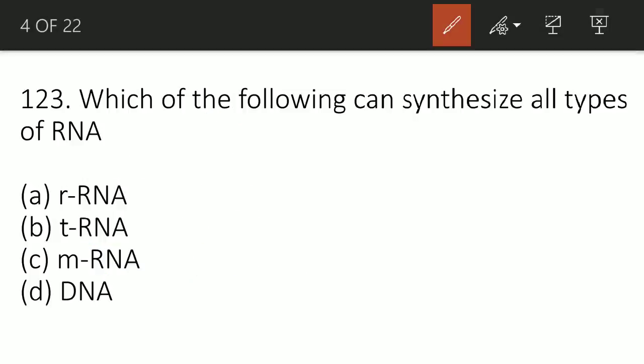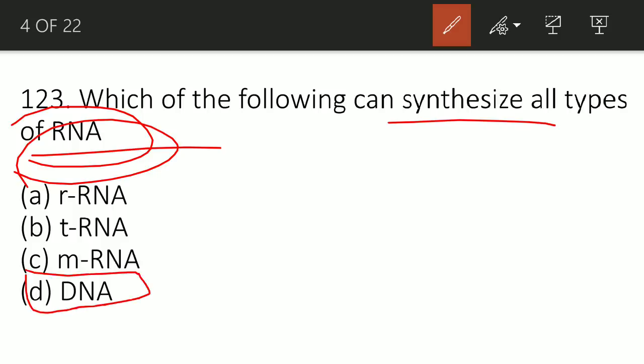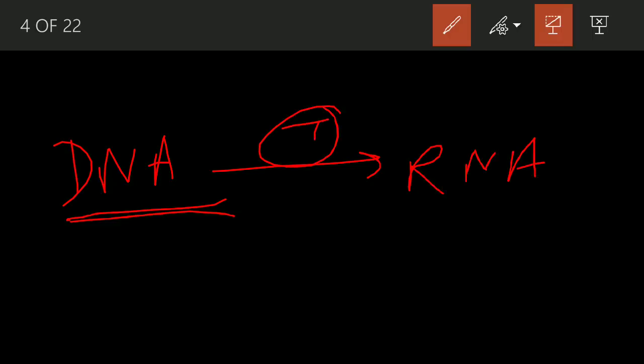Which of the following can synthesize all types of RNA? The correct option here is option number D: DNA. Synthesis of RNA is usually catalyzed by an enzyme RNA polymerase using DNA as a template in a process known as transcription. DNA can build all RNA whether it be tRNA, mRNA or rRNA, and that process is called transcription.